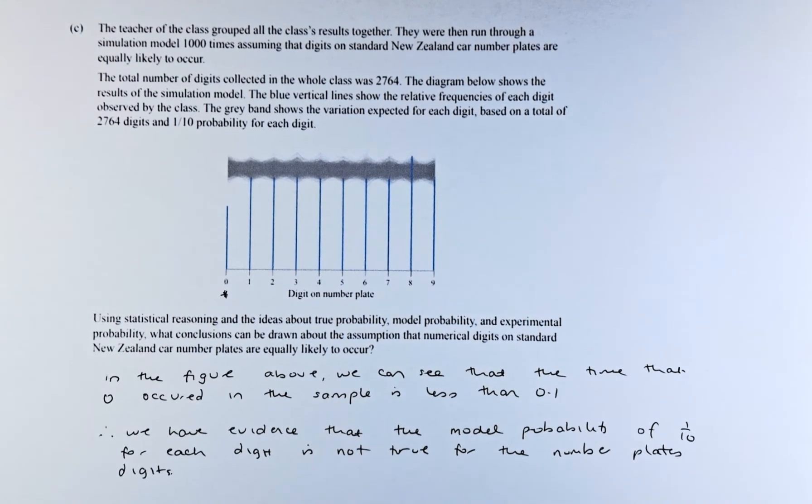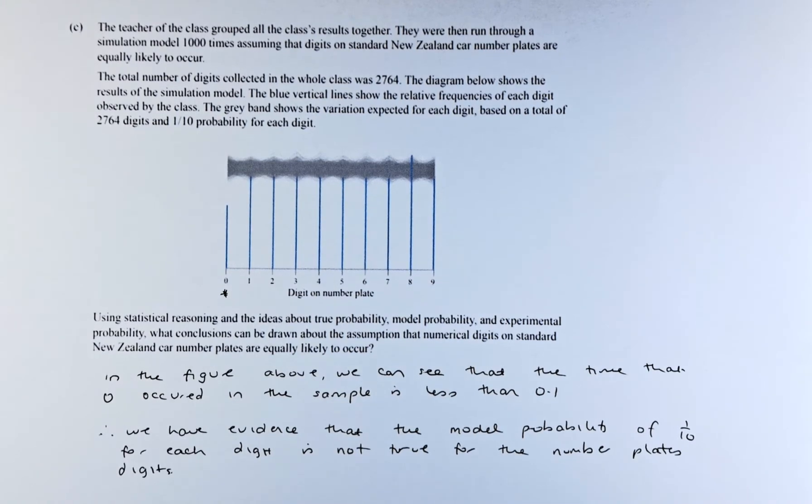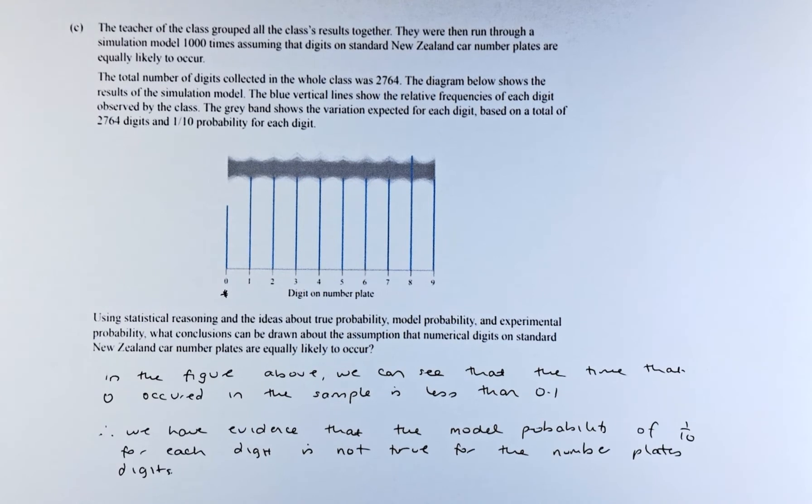The teacher of the class grouped all the class results together. They were then run through a simulation model 1,000 times, assuming that the digits of standard New Zealand car plates are equally likely to occur. So the chances are 1 out of 10 for every number. The total number of digits collected in the class was 2,764.